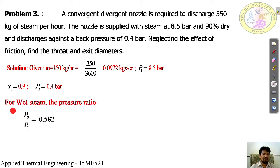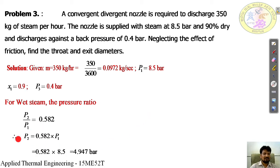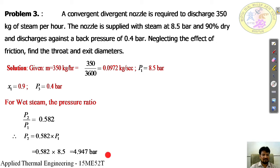From the critical pressure ratio for wet steam, we know the formula: P2 by P1 is equal to 0.582. Substituting the value of P1, which is the initial pressure of 8.5 bar: P2 is equal to 0.582 multiplied by 8.5, giving 4.947 bar, which is approximately equal to 5 bar. So P2 is equivalent to 5 bar.